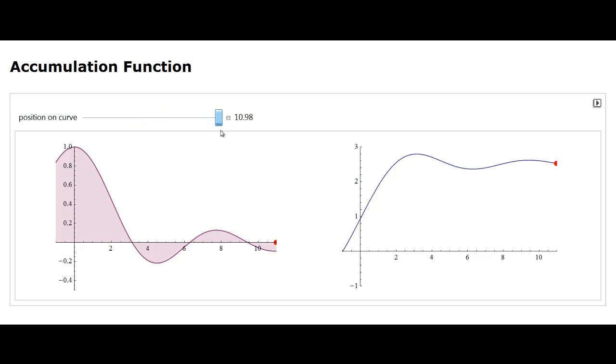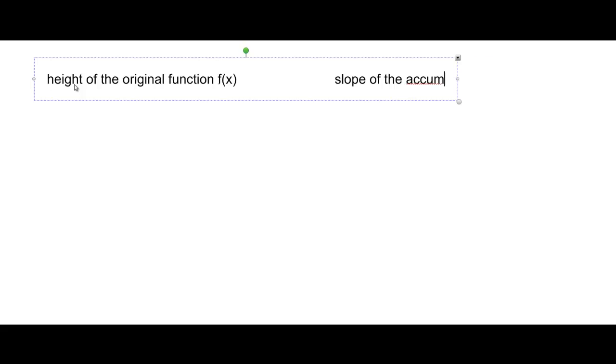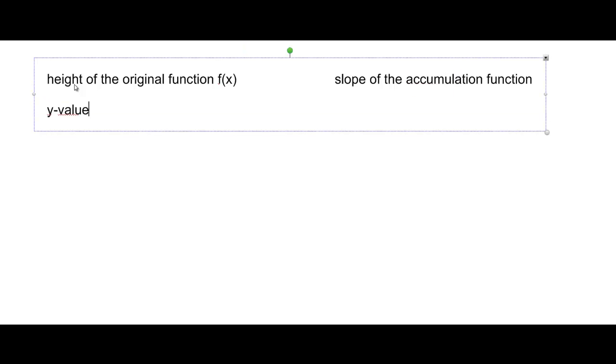What we're saying here is that there looks like there is a direct relationship between the height of the original function and the slope of the accumulation function. Or alternatively, we could say the y value of f(x) seems to be directly related to the derivative of the accumulation function.